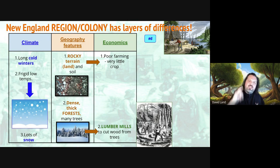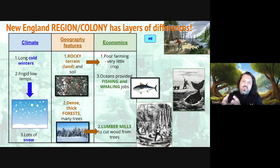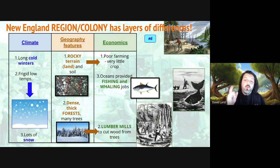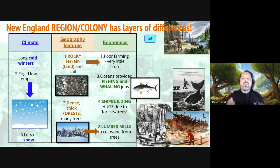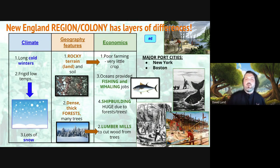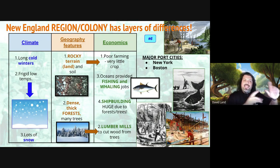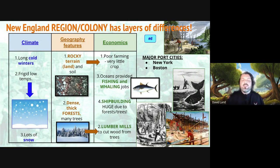Living in New England with rocky soil means poor farming — crops aren't going to take in that soil. But those forests create an opportunity: a lumber mill, a factory where wood gets processed and cut, also known as timber. There's also an ocean next to the New England region, so people here are going to be huge fishermen — they even hunt whales, because whale blubber is super valuable for oils, lamps, and fuel. Another big job from those forests is shipbuilding, since ships are the mode of transportation. Major port cities in New England include New York City and Boston.